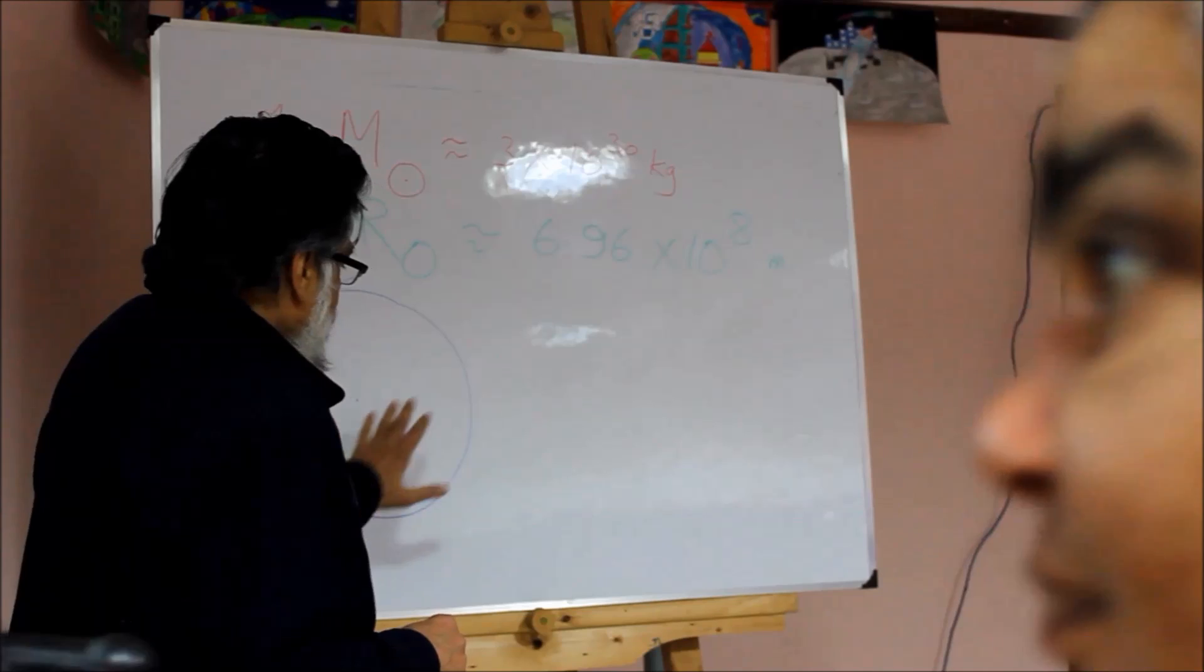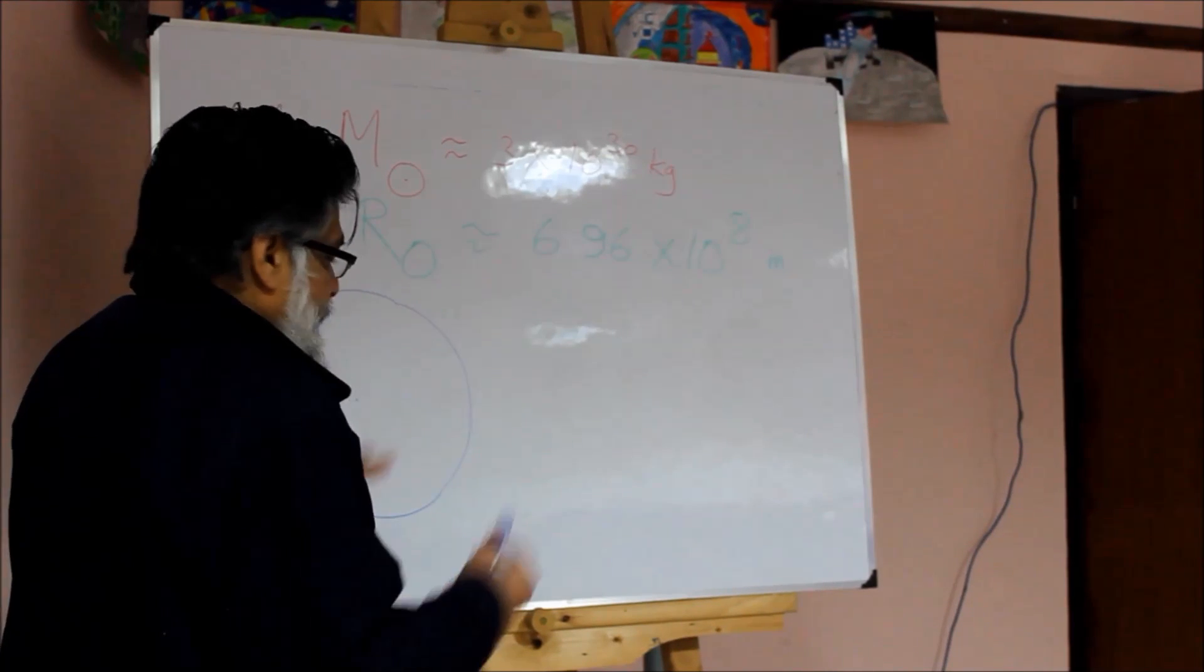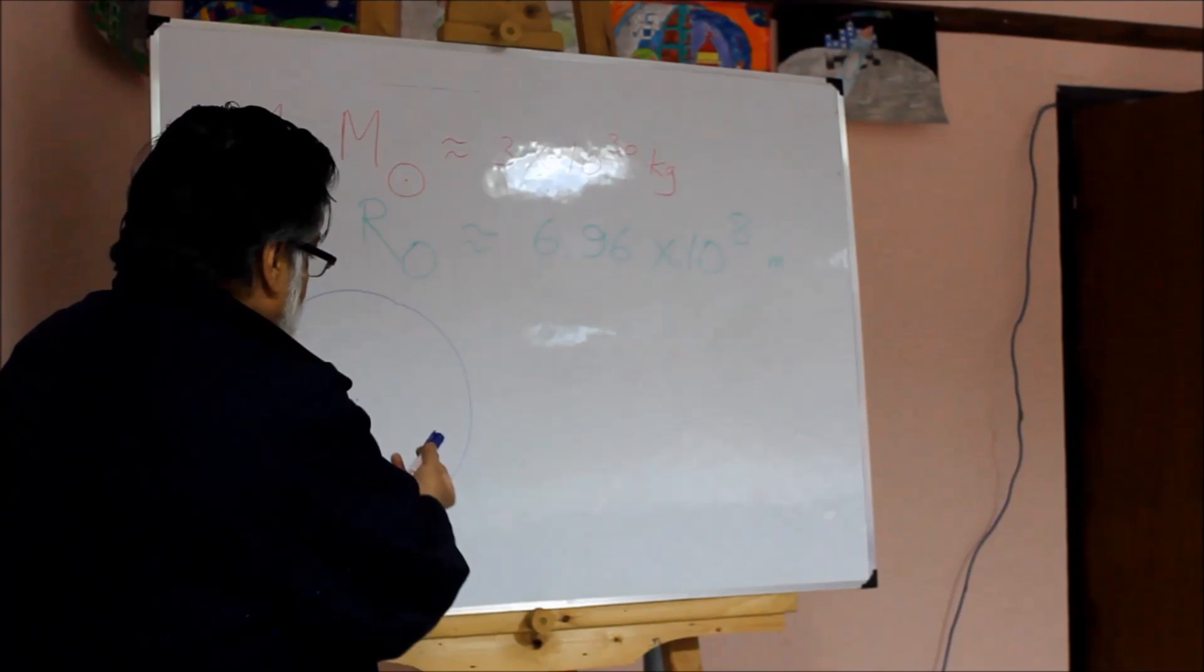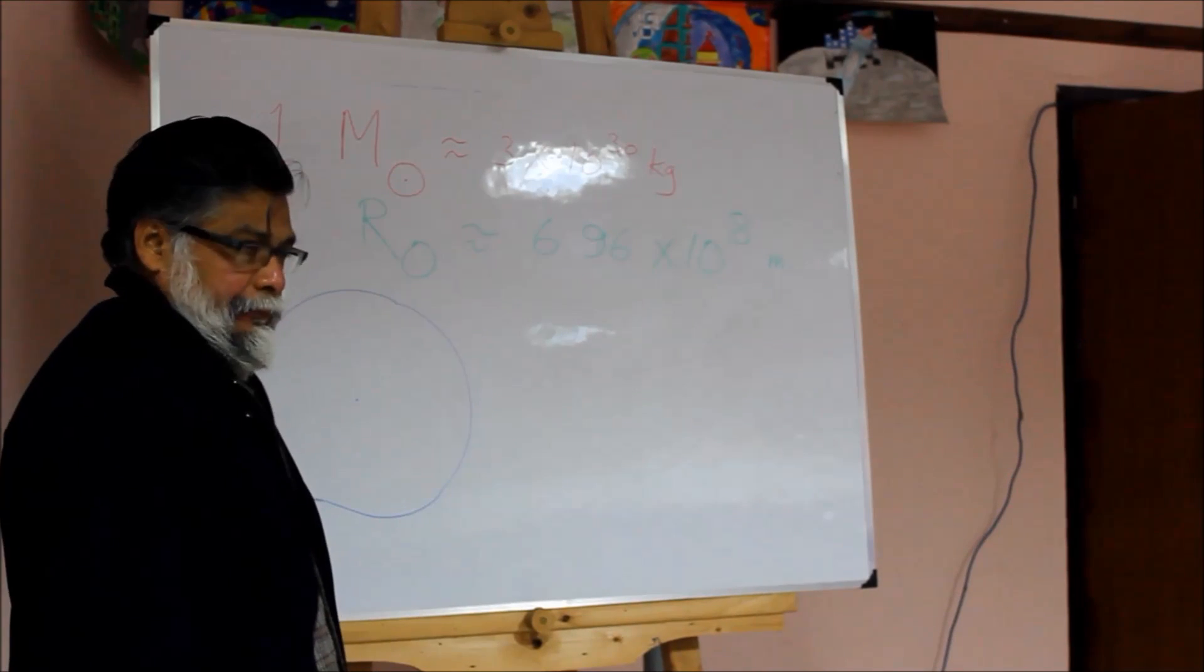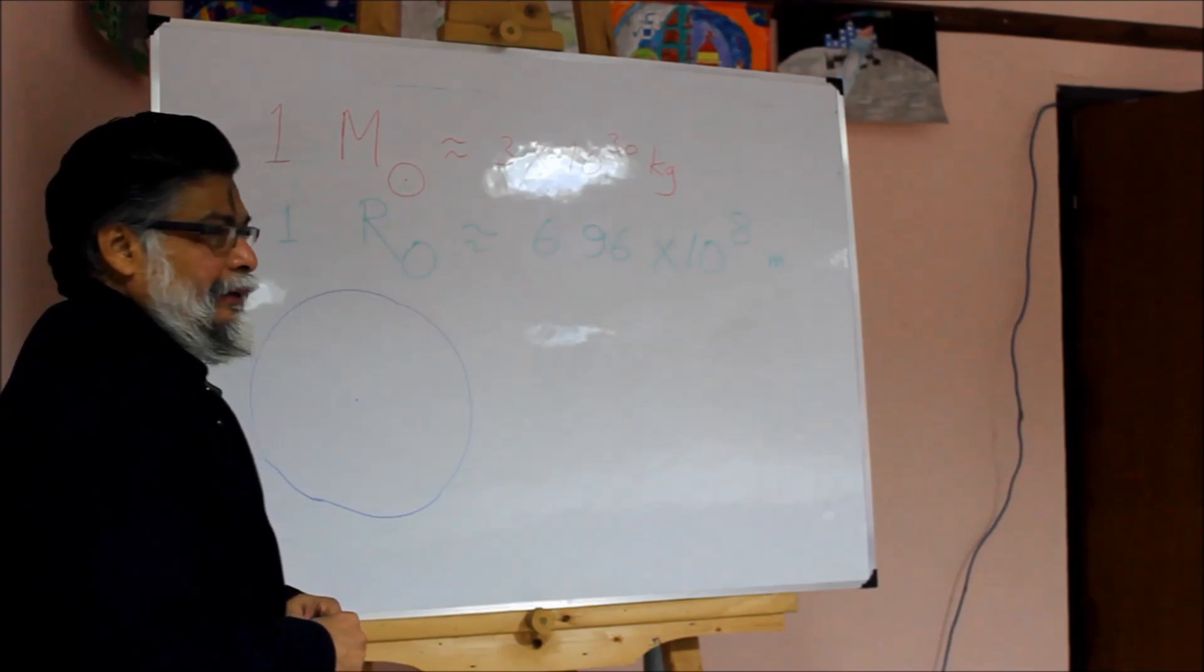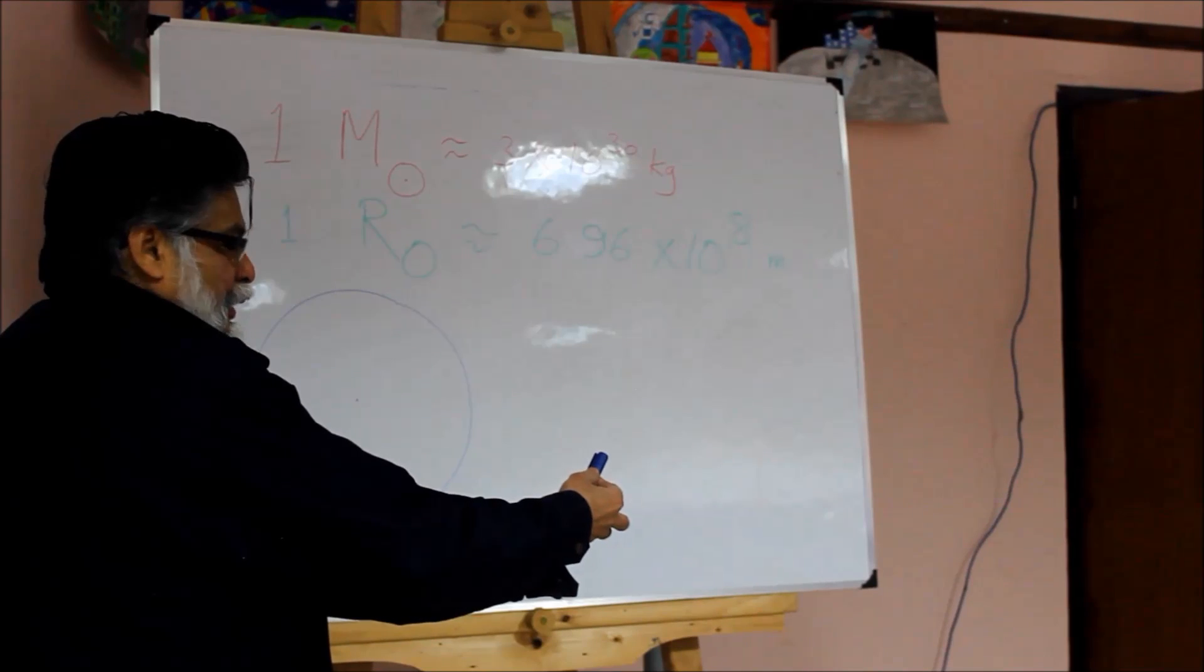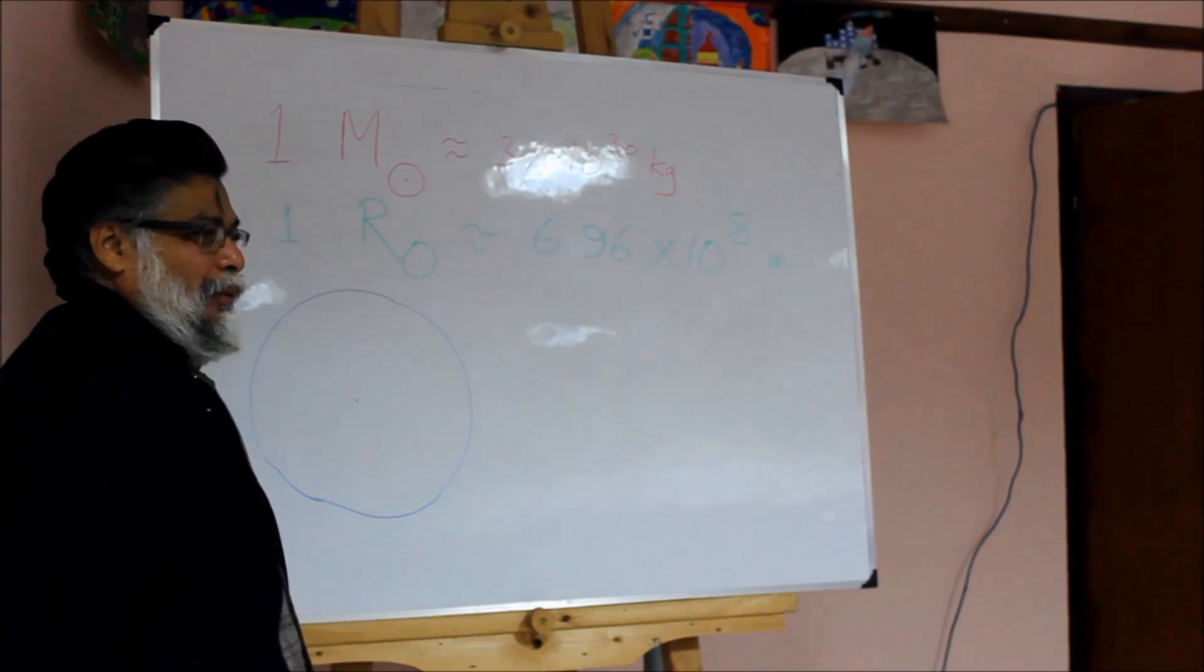So you have an object that is spherically symmetric. In your mind, you can think that I am talking about the Sun, but it can be anything, it can be Earth. And you want to understand why is it that an object so heavy is not collapsing under its own gravity?